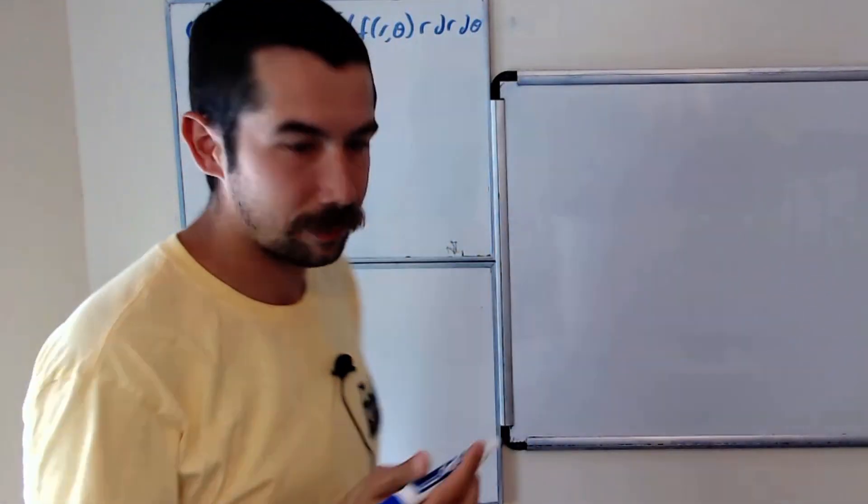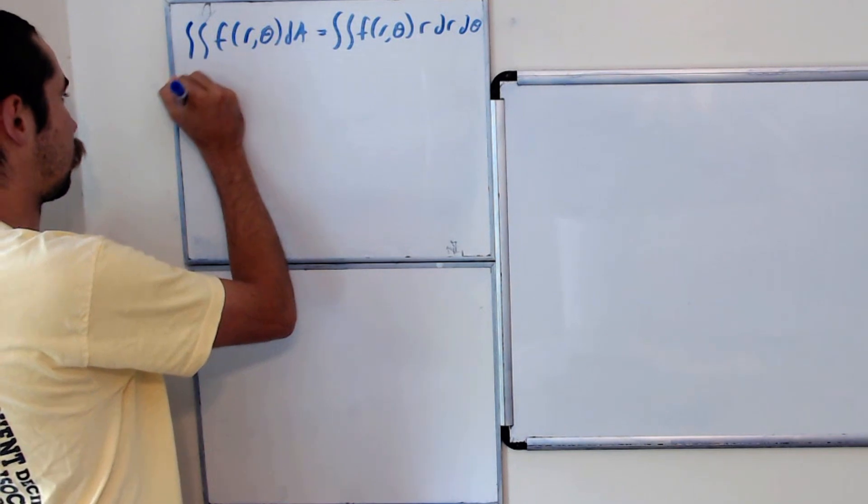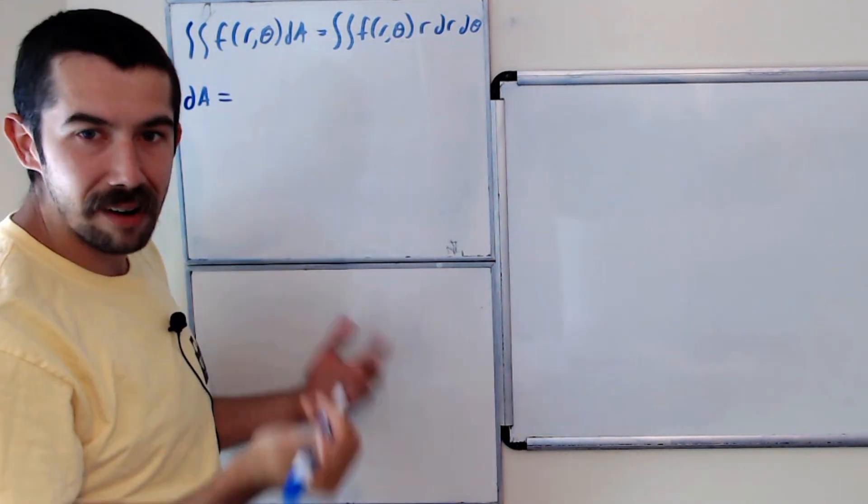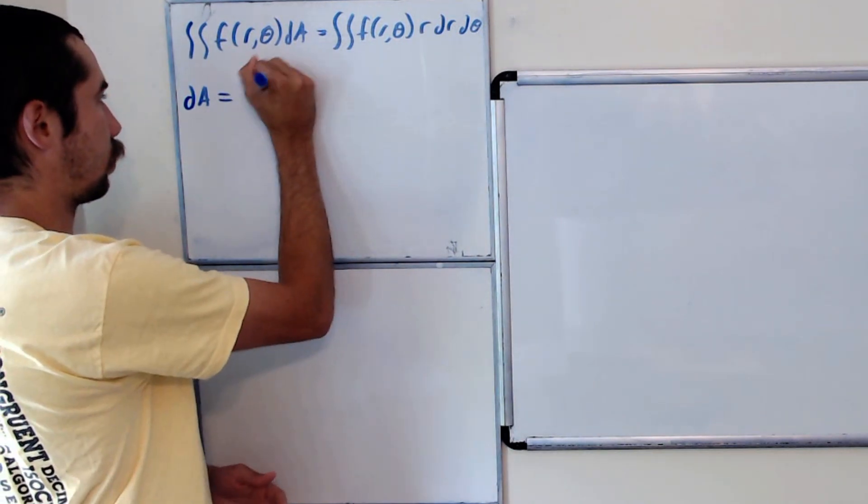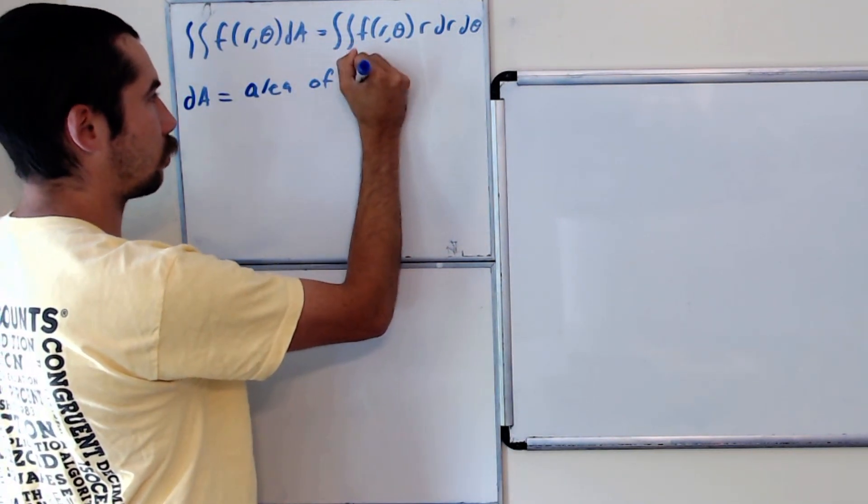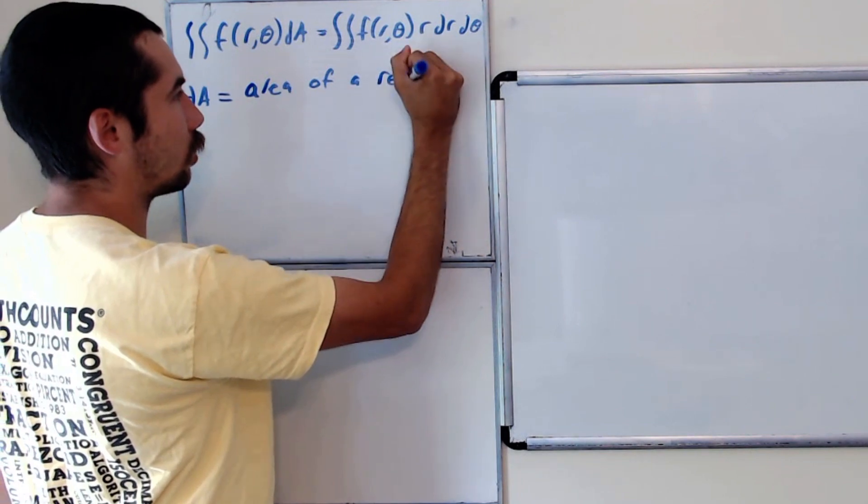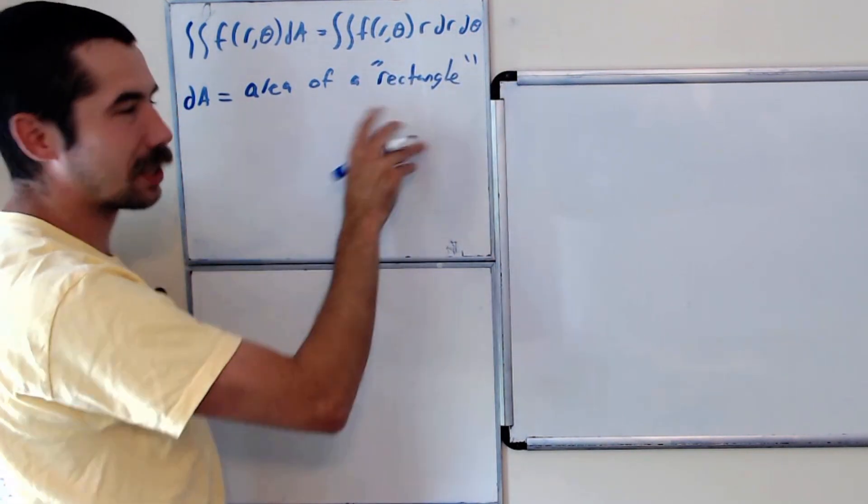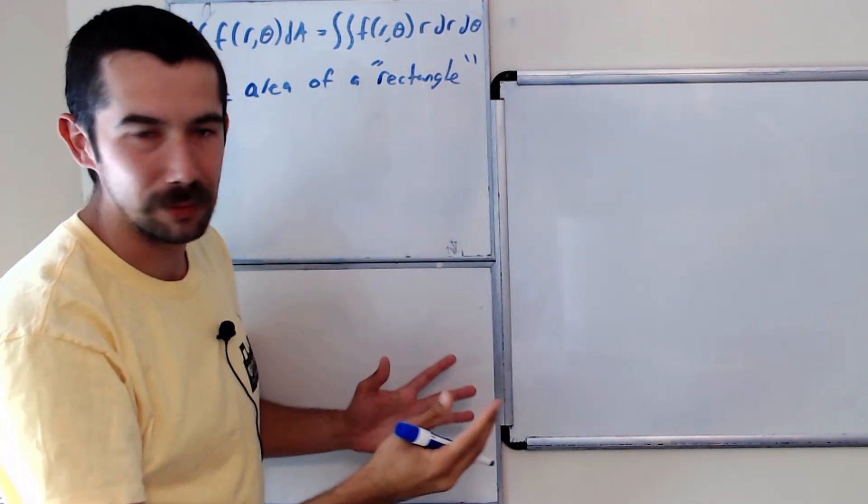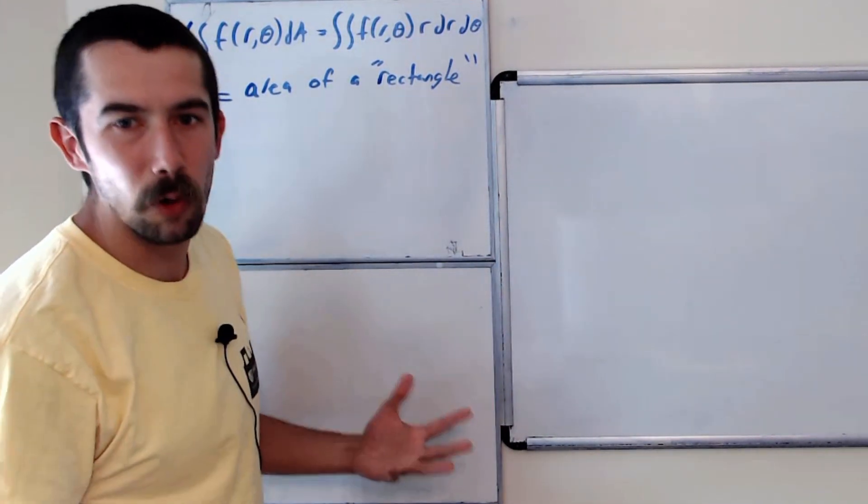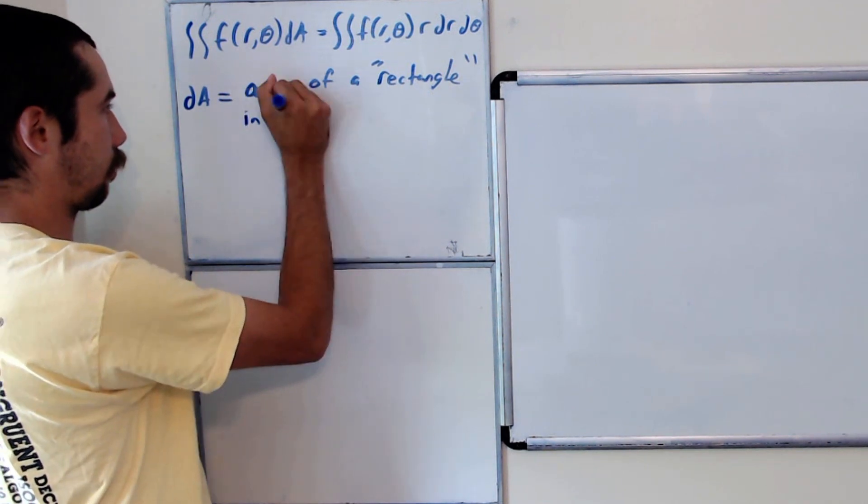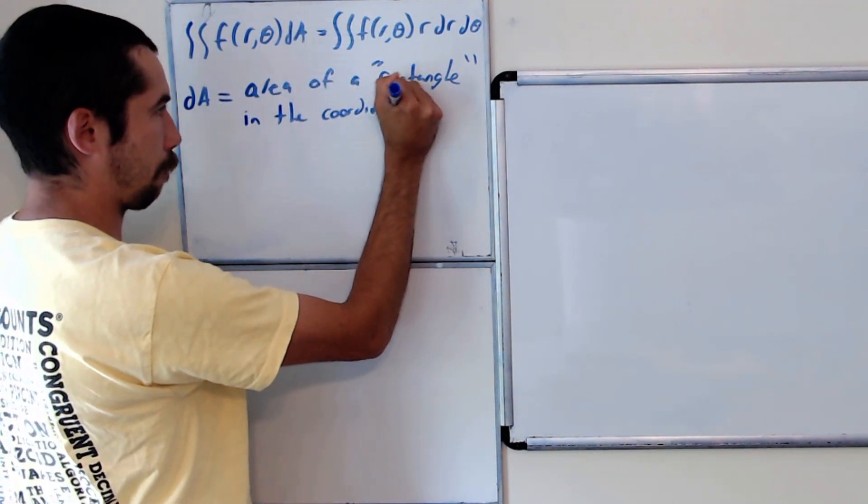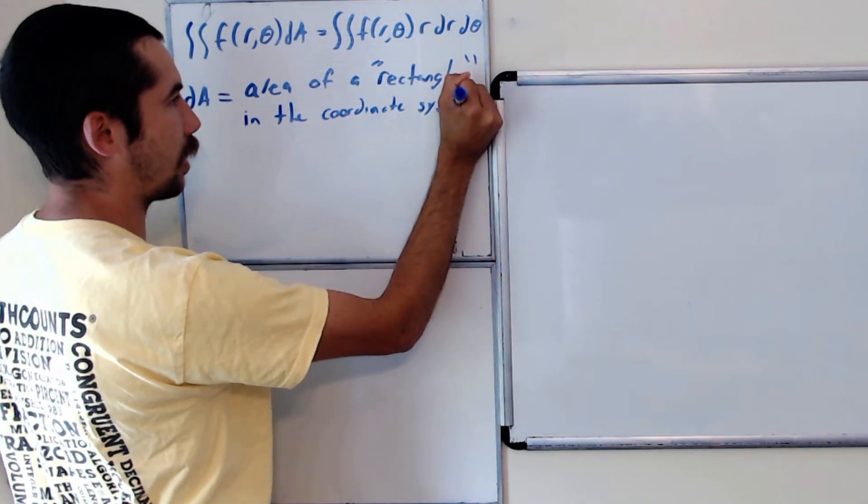Roughly speaking, dA could be thought of as the area of a rectangle, a small rectangle. I'm going to put quotes around rectangle because we're not going to use the traditional definition of a rectangle in whatever coordinate system we're using.